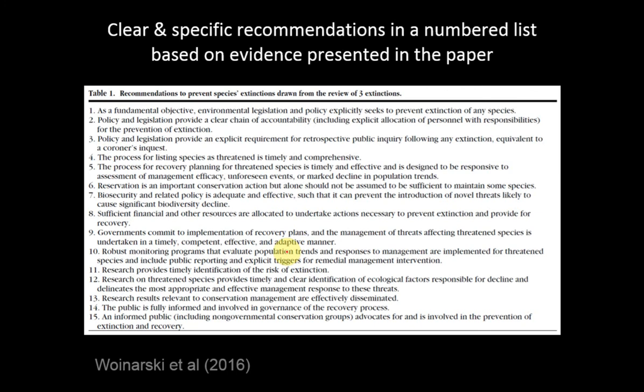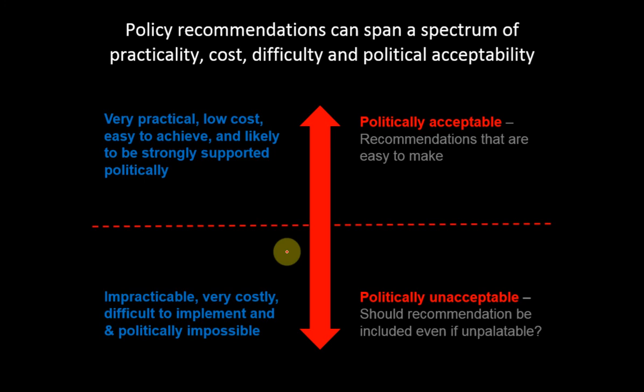A student asked about thinking through the pushback on implementing recommendations — great question. Policy recommendations span a spectrum of practicality, cost, difficulty, and political acceptability. At one end: very practical, low cost, easy to achieve, and likely to be strongly supported — like a recommendation for further research on a pollution problem. Nobody is offended by it, you're not impacting anyone's activities. At the other end: shut down the whole coal sector — that has enormous cost, it's difficult to implement, the coal sector has legal rights, and it becomes politically unacceptable very quickly.